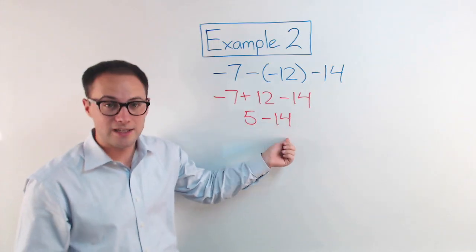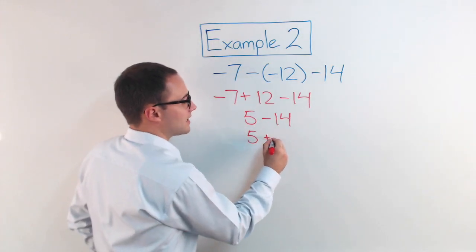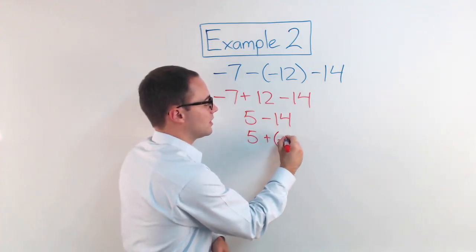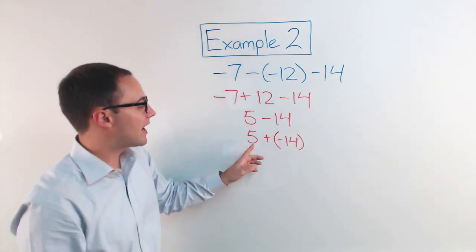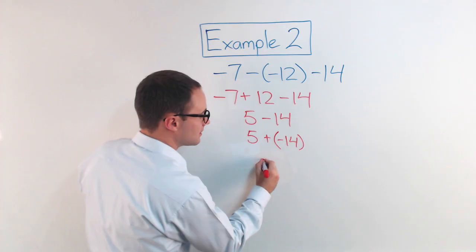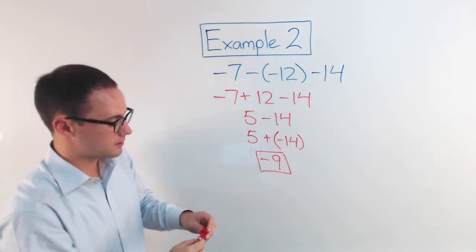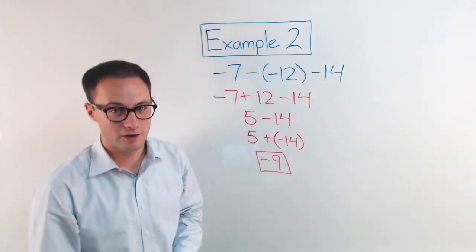Again, here, subtracting the integer. I can change it to an addition. It's the same thing as adding its opposite. That's a positive 14. So, I'm going to change it to negative 14. I'm adding its opposite. 5 plus negative 14 is negative 9. So, after simplifying that, we're going to get to negative 9. Here's some more to try on your own.